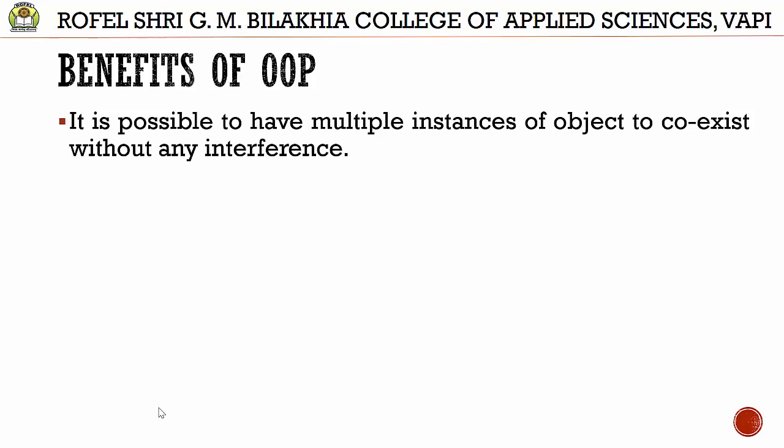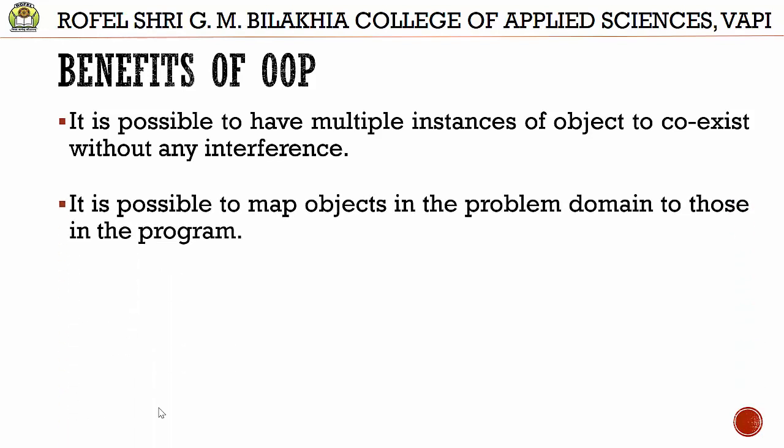Next, it is possible to have multiple instances of an object co-exist without any interference. We can create multiple objects — for example, in a Person class, we can create two objects P1 and P2. Both have different memory and different variables, so there is no interference between those two objects.